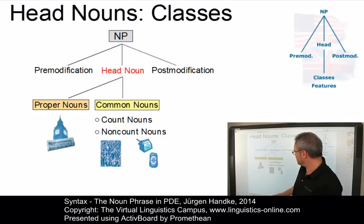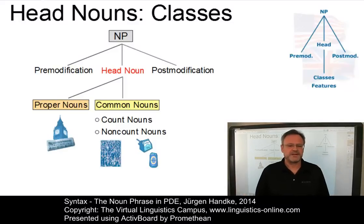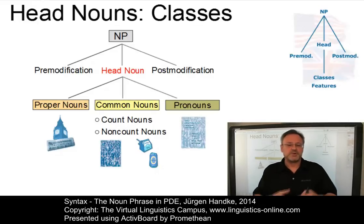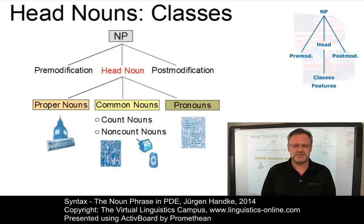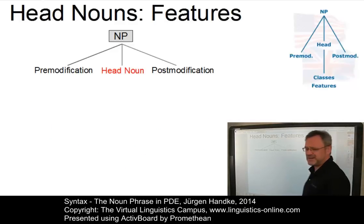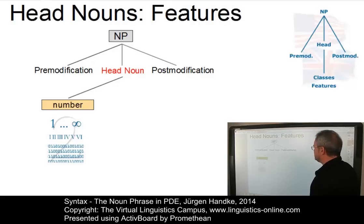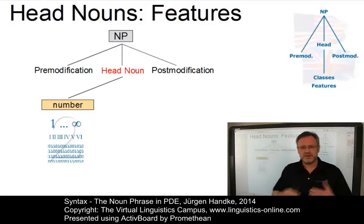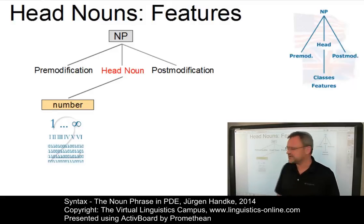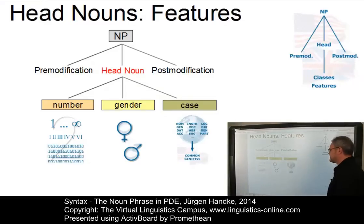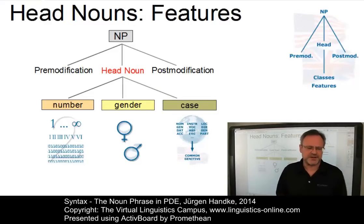The open class of head nouns — proper nouns and common nouns — is supplemented by the closed class of pronouns, which can deputize for whole noun phrases. As far as noun features are concerned, we can identify the following: the feature of number, where we have the singular and plural form in present-day English; gender — personal versus non-personal; and of course case, where in present-day English we have the genitive case and the common or oblique or unspecified case.